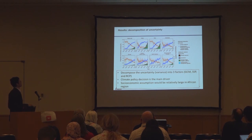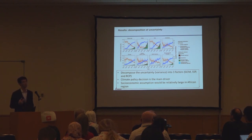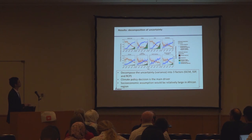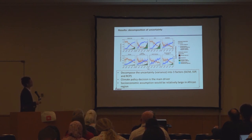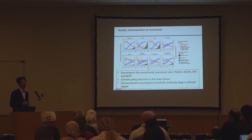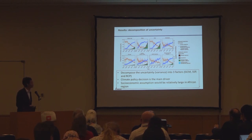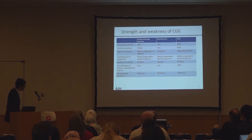Finally, we did a decomposition analysis of the uncertainty. We have uncertainty in climate information, socioeconomic futures, and whether we do climate mitigation or not. Our conclusion was that climate policy is the strong factor in changing these macroeconomic impacts. But in some regions, there is a blue color — socioeconomic factors — so if we change from an SSP 3 world to an SSP 1 world, from the worst socioeconomic case to a sustainable world, then it can reduce the climate change impacts. That's the final message of this study.